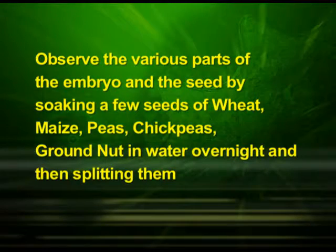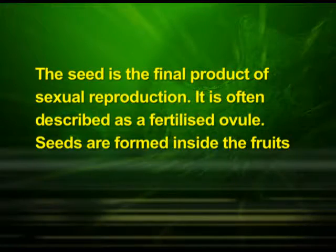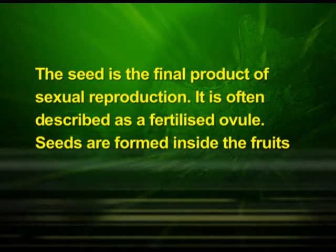You can observe the various parts of the embryo and seed by soaking seeds of wheat, maize, peas, chickpeas and groundnut in water overnight, then splitting them open. Now let us discuss the seed. In angiosperms, the seed is the final product of sexual reproduction, often described as a fertilized ovule. Seeds are formed inside the fruits.